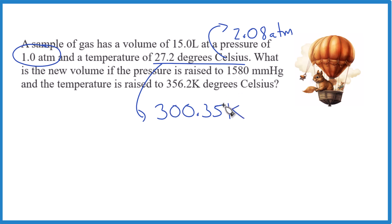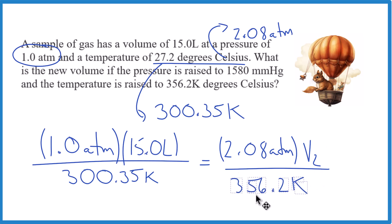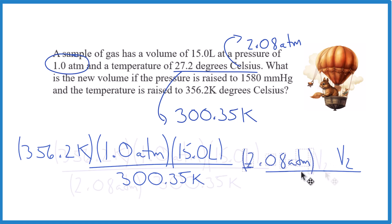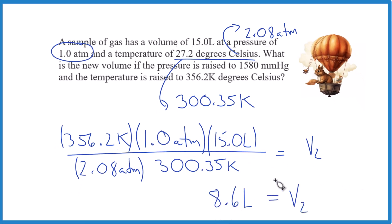We plug everything into our equation and work to get V2 by itself. Multiply both sides by the temperature term so it cancels on one side, then divide both sides by the pressure term so it cancels on the other side. We have V2 by itself — multiply everything in the numerator, then divide by the denominator. You end up with 8.6 liters. Make sure everything works out to the same units and you'll be good.